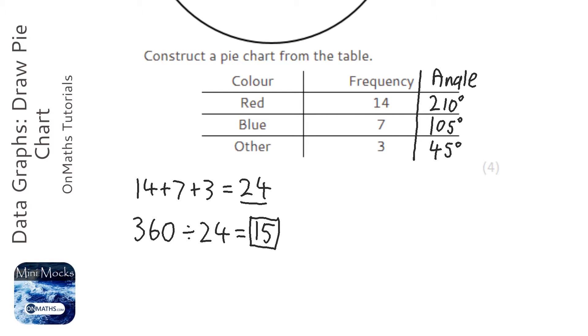And let's just check this. Let's add them up. 210 plus 105 plus 45 equals 360.